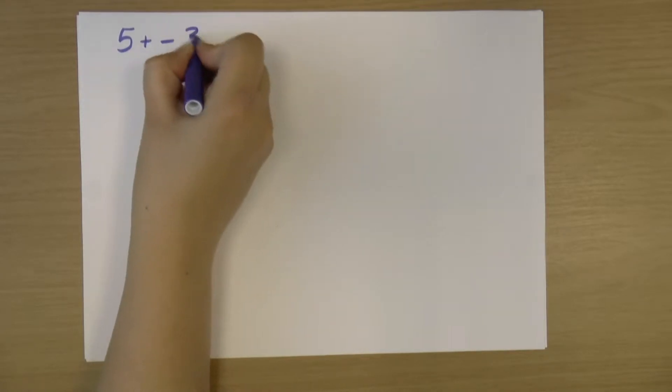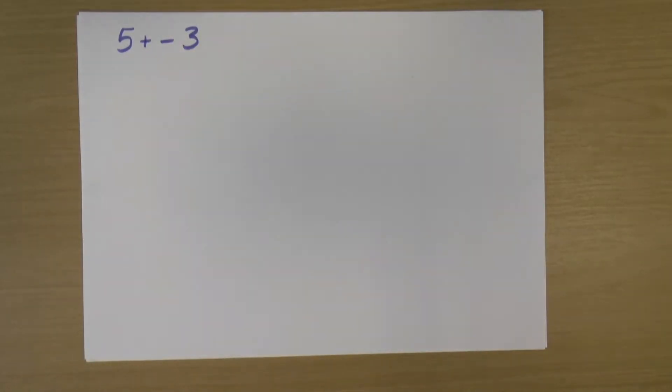Sometimes we'll be asked to add or subtract these different types of numbers and we've got a bit of a rule. So if I've got, say, 5 plus minus 3, so that's the sum that we've got.